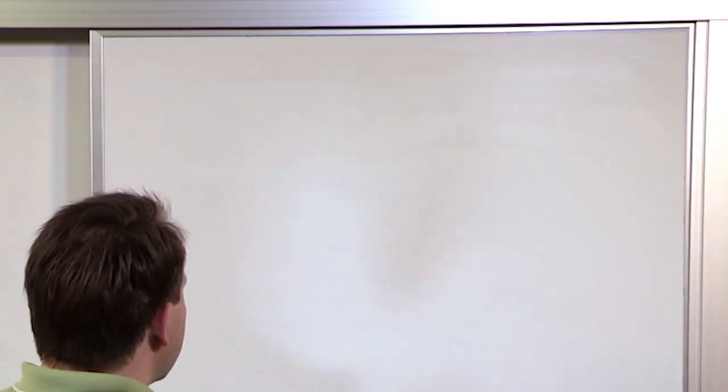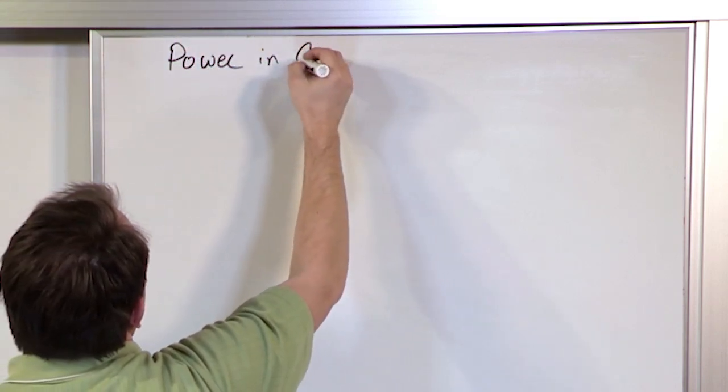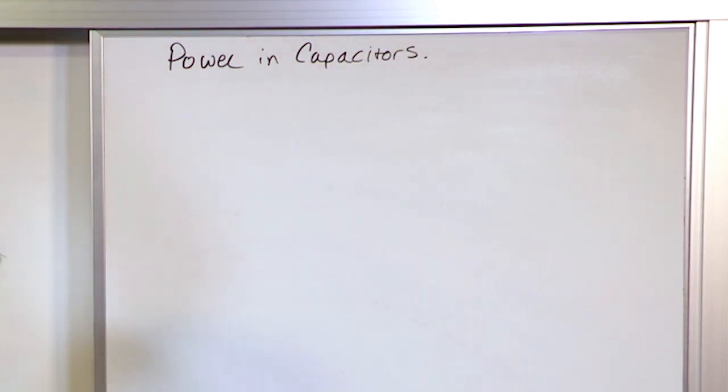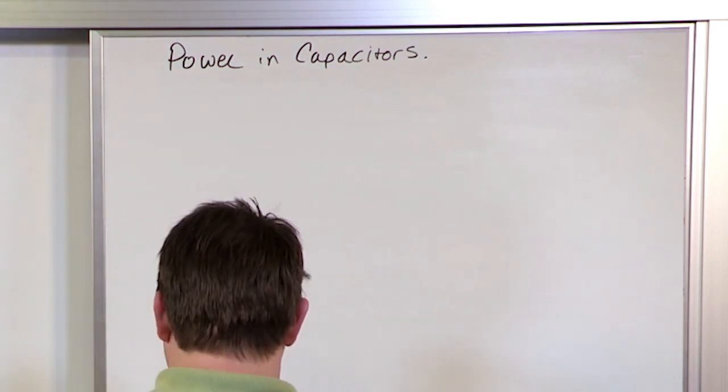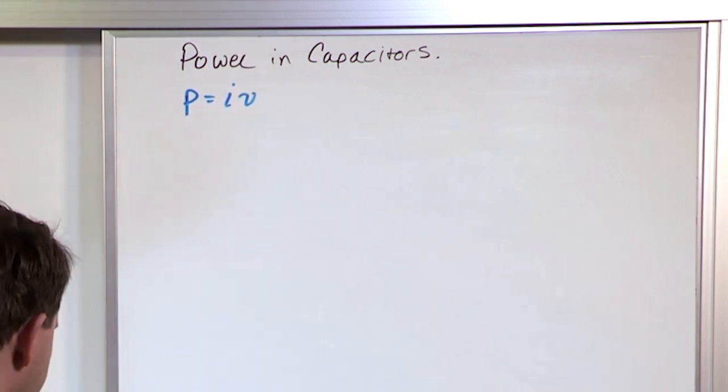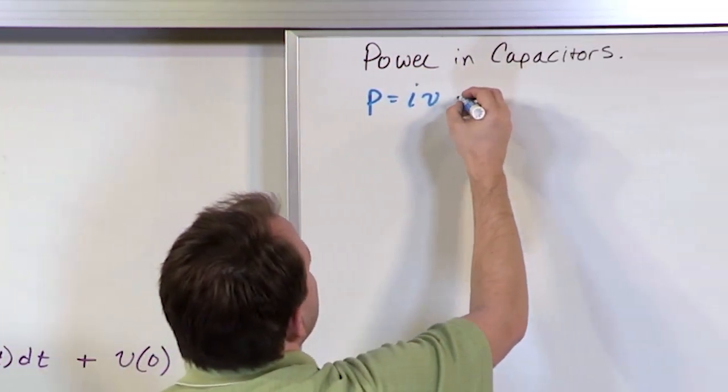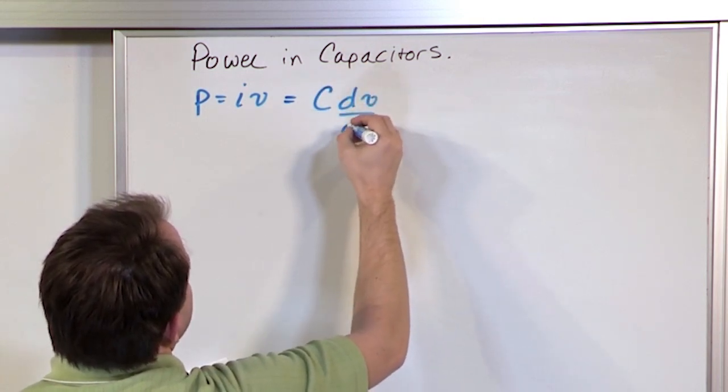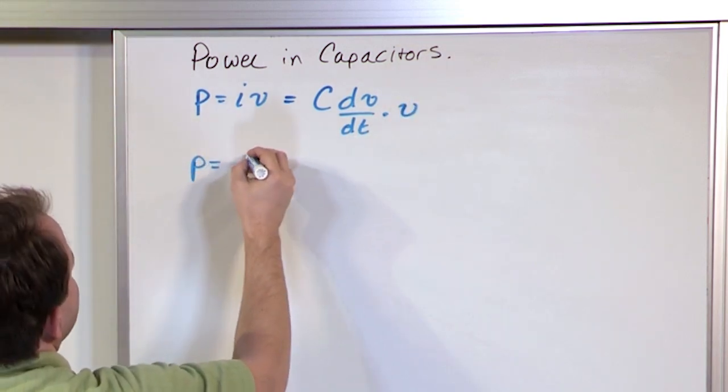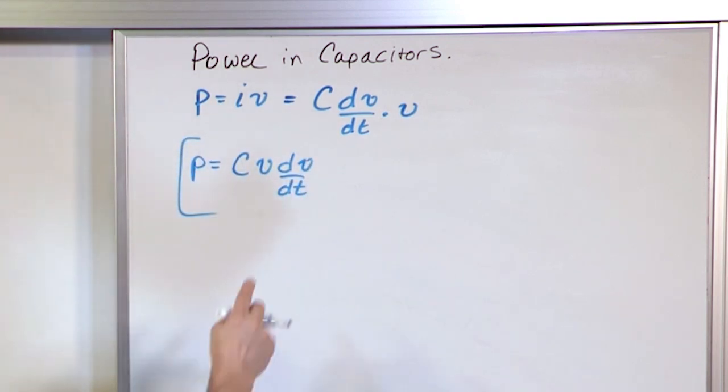All right. The next thing we want to derive or talk about is power. So let's talk about power in capacitors. And in just a moment, we'll talk also about energy stored in a capacitor. But for now, recall that power is I times V. It's always true. Current times the voltage. Now, the current in a capacitor, current is C dV dt. So I'm going to put it right in here. So I'm going to say C dV dt. And then I still have a voltage out here. So the power is C times V times dV dt.